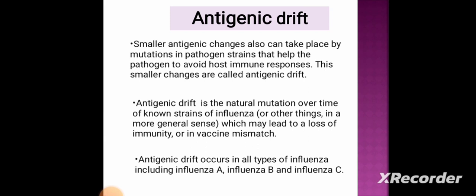Antigenic drift occurs in all types of influenza, including influenza A, influenza B, and influenza C. Whereas antigenic shift occurs only in the influenza A subtype of the virus.